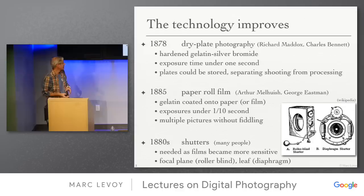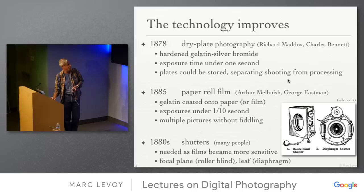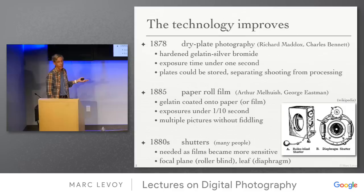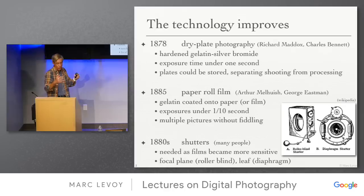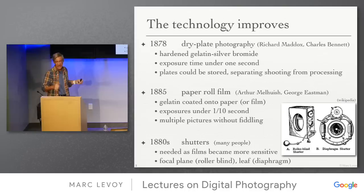There had to be parallel development in shutter technology. This illustration shows both kinds: the roller blind shutter, the forerunner of today's focal plane shutter, and the diaphragm shutter, which because of its action should be in the lens plane — not the film plane — because it's not instantaneous and would otherwise vignette the picture.